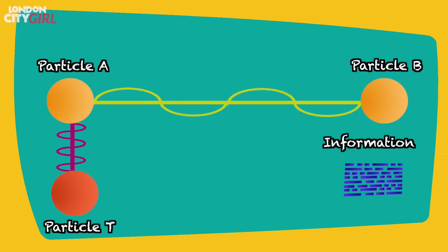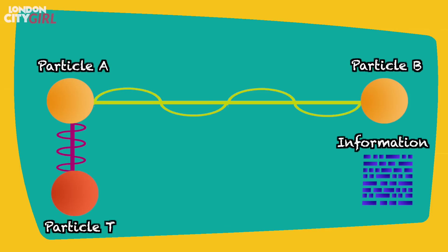This information is then sent across to where particle B is kept. As particle A and B are entangled, this information about how the quantum state of particle T relates to particle A will also reveal how the quantum state of particle T relates to particle B.